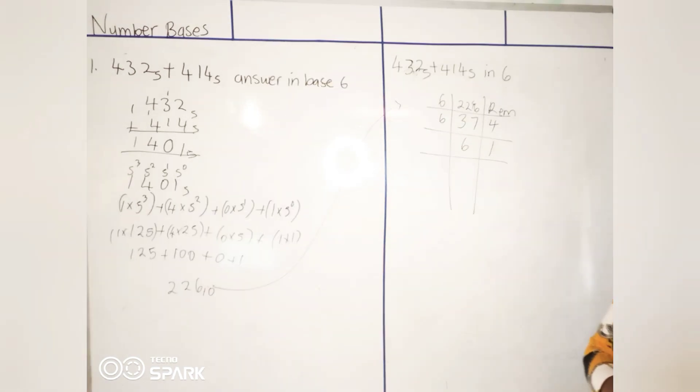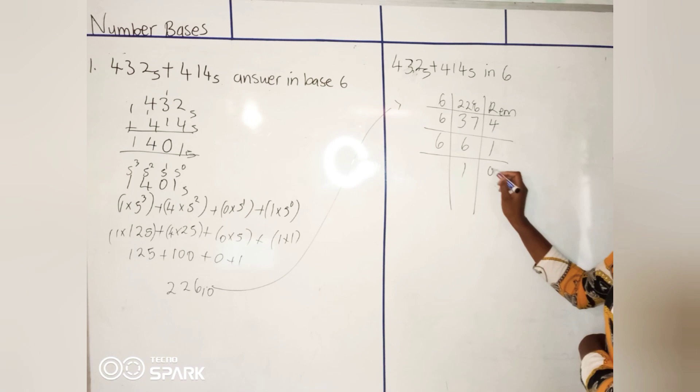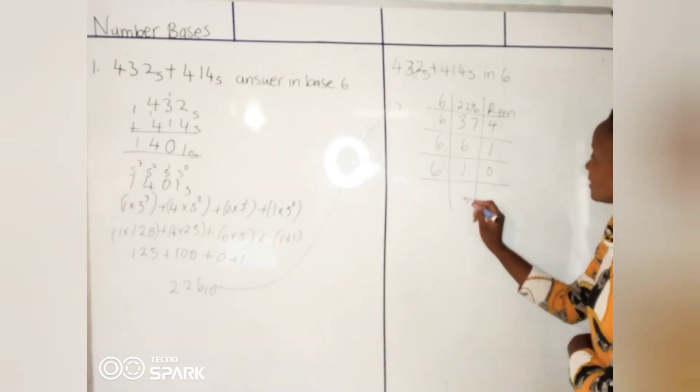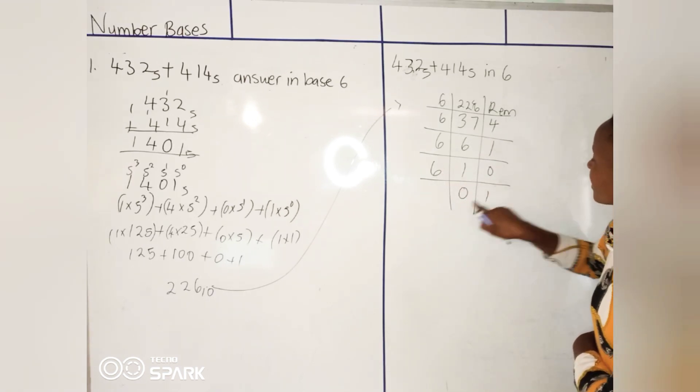So 6 into 6 it's 1 remainder 0. Pay attention to this last part. 6 into 1, we'll say it's 0 remainder 1. The number that you have there, that's the one that's gonna go there.